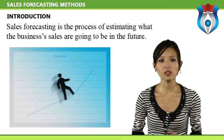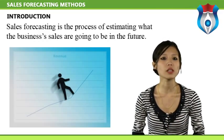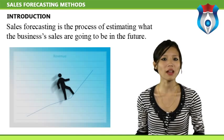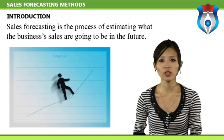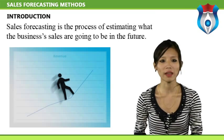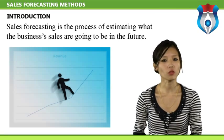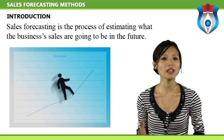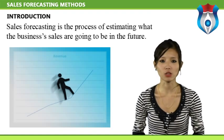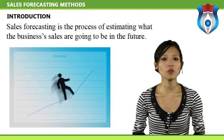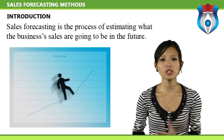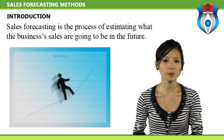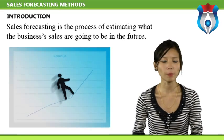Sales forecasting is the process of estimating what the business's sales are going to be in the future. It is an integral part of business management. Without a solid idea of what future sales are going to be, one cannot manage inventory, cash flow, or plan for growth. The purpose of sales forecasting is to provide information that one can use to make intelligent business decisions. Sales forecasting for an established business is easier than for a new business, as the established business already has a baseline of past sales.